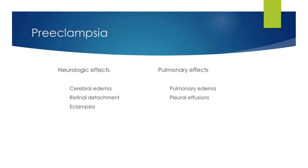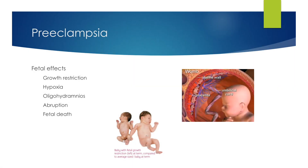Neurologic effects include cerebral edema, retinal detachment, and eclampsia. Pulmonary effects are pulmonary edema and pleural effusions. The fetus can also be affected. In preeclampsia, it is not uncommon to see growth restriction, hypoxia, oligohydramnios, placental abruption, and occasionally fetal death.